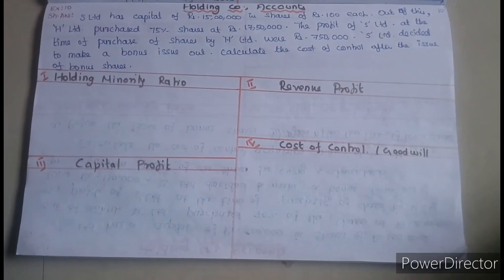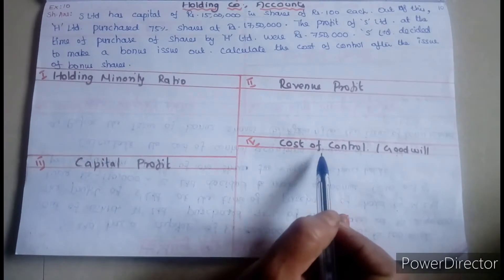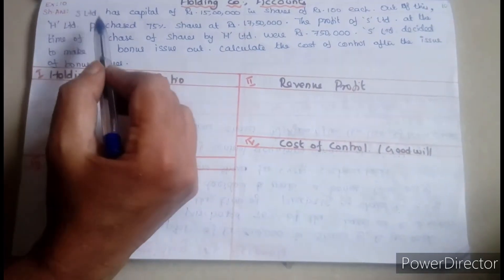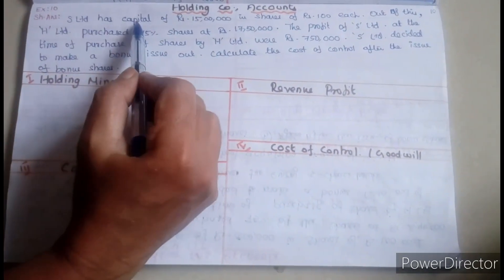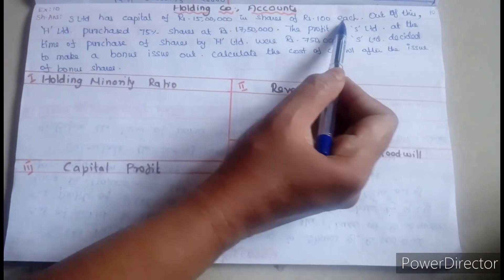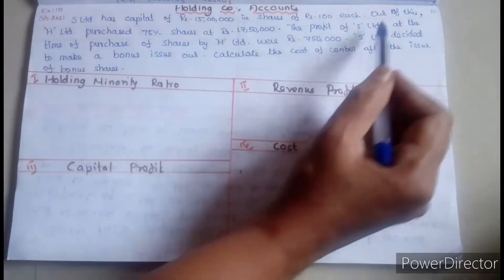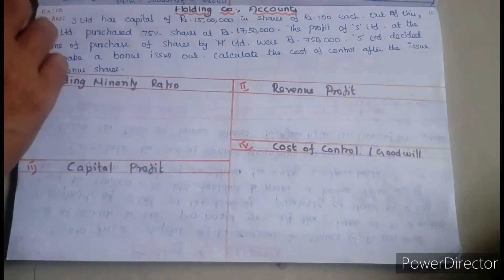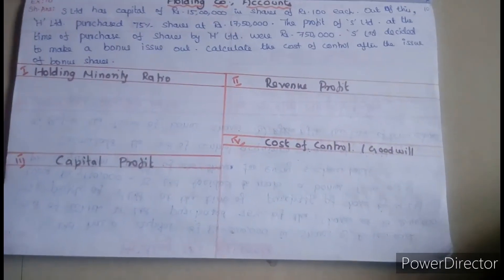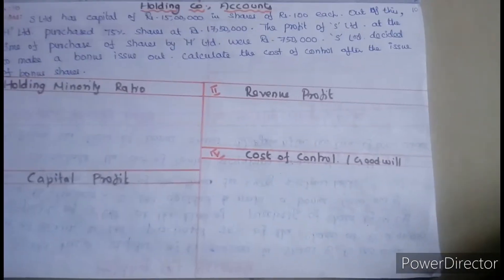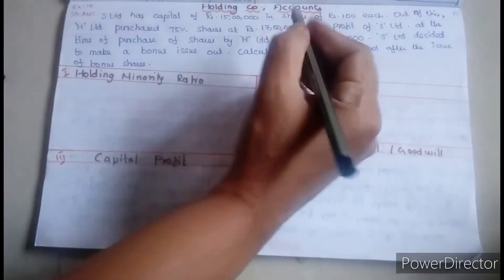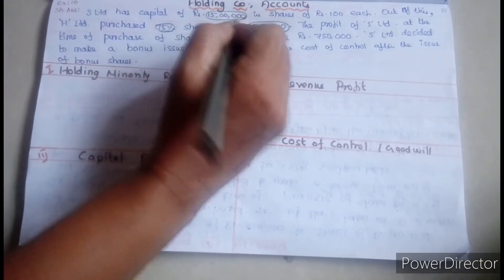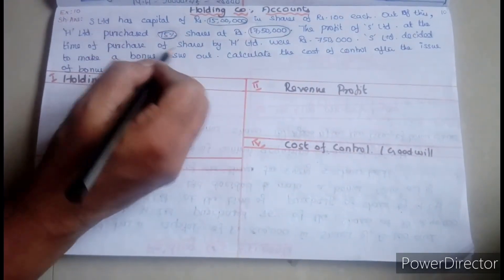Welcome to Healthy Education. Holding company accounts: cost of control, goodwill, or capital reserve. Exercise 10. S Limited has capital of 15 lakh in shares of rupees. Out of this, H Limited purchased 75% of shares — that is 75% of 15 lakh — for 17 lakh 50 thousand.